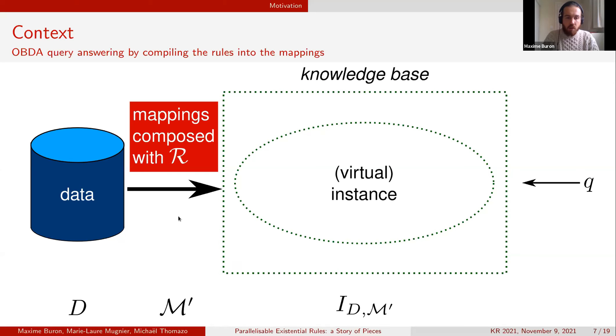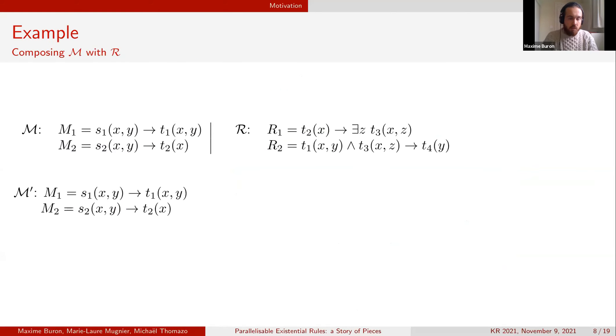We generate another set of mappings with which we can rewrite the query directly on the data. This approach shows an improvement in terms of query answering performance but it's defined for light languages. I want now to show you how we can do it using a set of mappings and a set of existential rules. We iteratively derive new mappings.